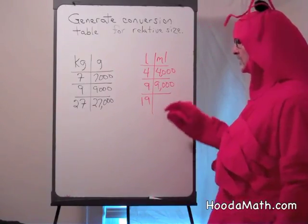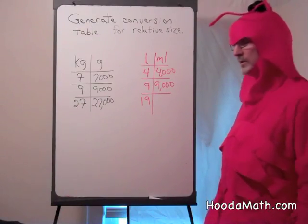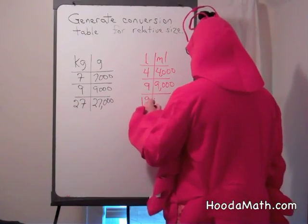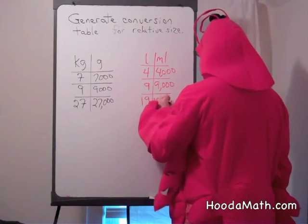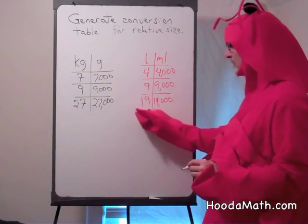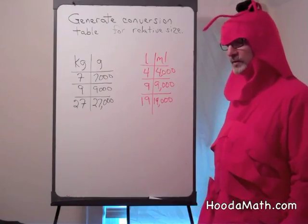And finally, if you have 19 liters, how many milliliters? You have 19,000 milliliters. Notice you're multiplying by a factor of 1,000.